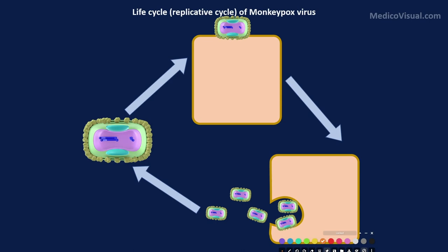We do not have many studies available specifically on monkeypox virus, but scientists from around the world have done extensive research on vaccinia virus, which is one of the species of the same genus to which monkeypox belongs. The replicative cycle of monkeypox virus is based on the study of vaccinia virus, and it is presumed that the replicative cycles of both monkeypox and smallpox viruses are almost the same as that of vaccinia virus.